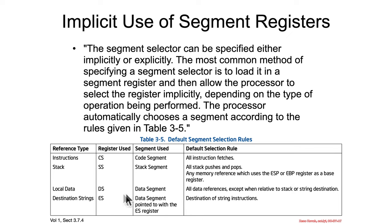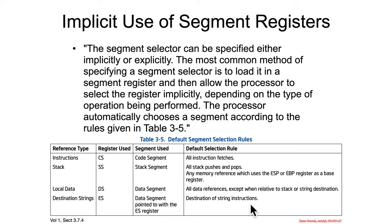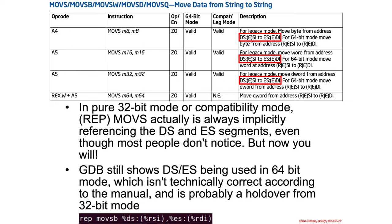Data access implicitly uses the DS for everything except their special string destination things. ES is also used when you're dealing with string instructions.